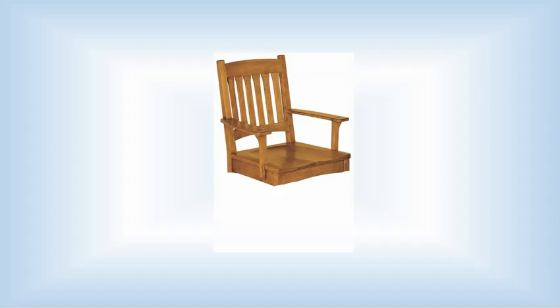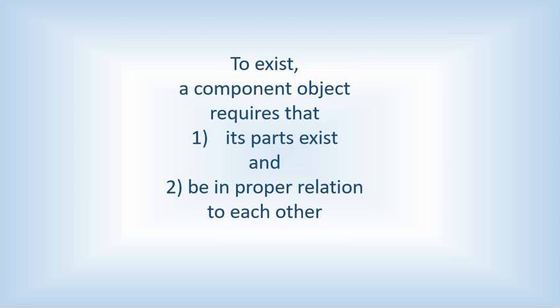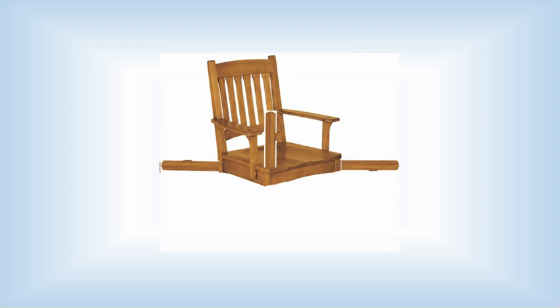More than that, component objects require their parts to exist and be in the proper relation to each other. If we have the pieces of the chair, but one leg is pointing left, one right, one up and one down, it's not a chair.